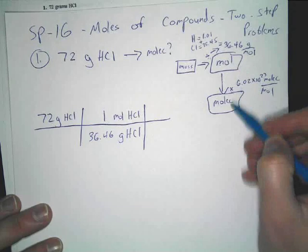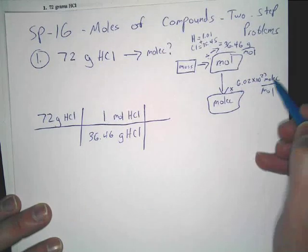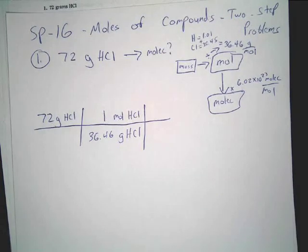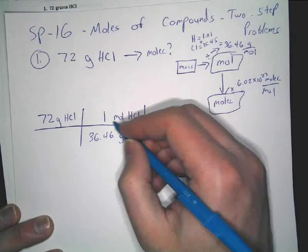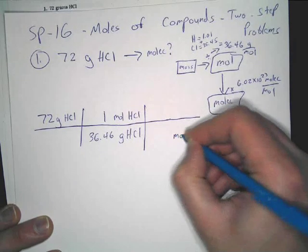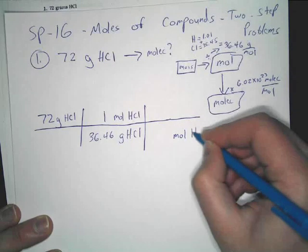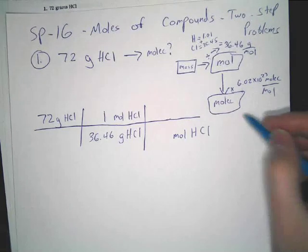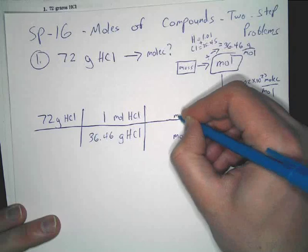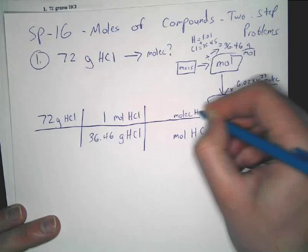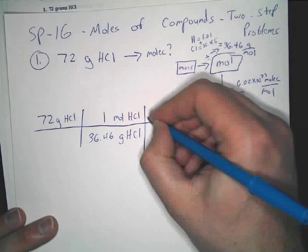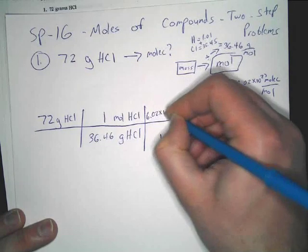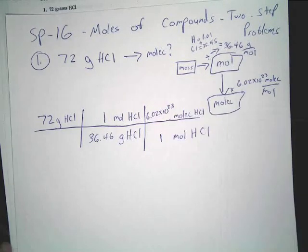Then, as you go from moles down to molecules, you're going to multiply by 6.02 times 10 to the 23rd. So, we've got moles. We've got to put moles down here. Here, we are converting to molecules. So, molecules goes in the top. And you just remember your conversion. One mole is equal to 6.02 times 10 to the 23rd molecules HCl.